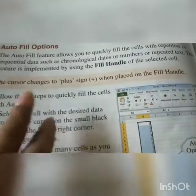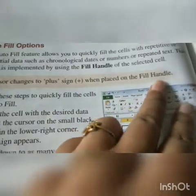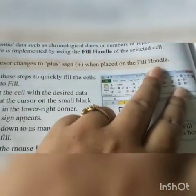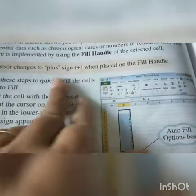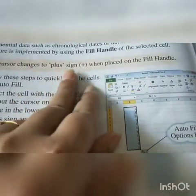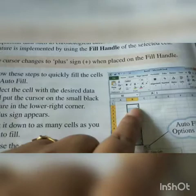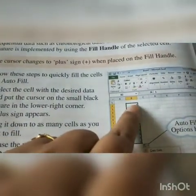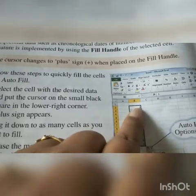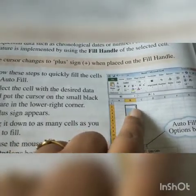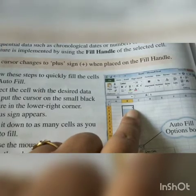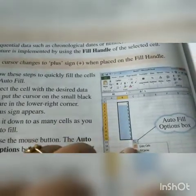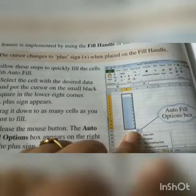The cursor changes to a plus sign when placed on the fill handle. For example, write the number one in a cell, then place the cursor on the fill handle — your cursor will change into a plus sign. Drag it down and all the cells will be automatically filled up with the number one.